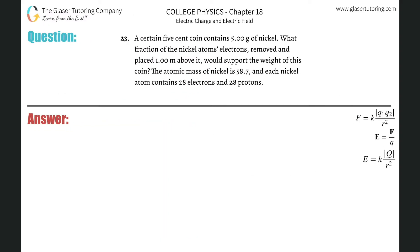Number 23. A certain 5-cent coin contains 5 grams of nickel. What fraction of the nickel atoms' electrons, removed and placed 1 meter above it, would support the weight of this coin? The atomic mass of nickel is 58.7, and each nickel atom contains 28 electrons and 28 protons.